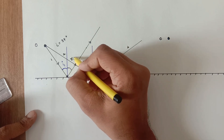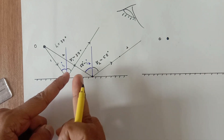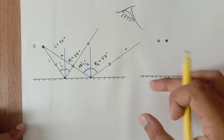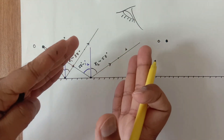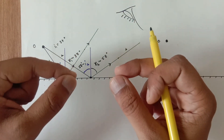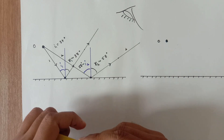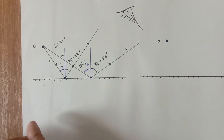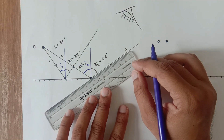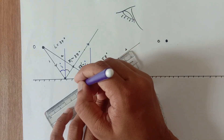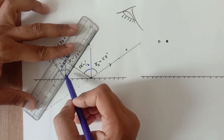I'll draw the observer's eye here. These two reflected rays go into the observer's eyes. Since the reflected rays are diverging in nature — going far apart — a virtual image is formed. If they had converged, we would get a real image. Since they are diverging, we extend these two reflected rays backwards using a dotted line.